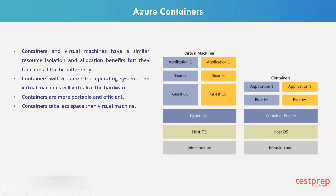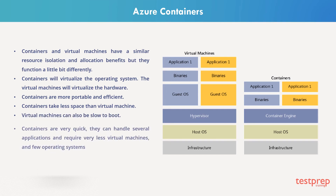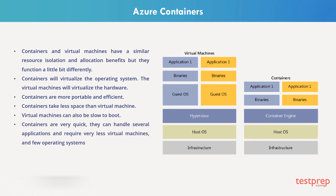Each virtual machine includes a full copy of the operating system, the application necessary binaries and libraries, which will take tens and hundreds of gigabytes together. Virtual machines can also be slow to boot. But containers are very quick — they can handle several applications and require very few virtual machines and few operating systems. Containers virtualize the operating system instead of virtualizing the hardware, and are portable, efficient, and very quick in running the application.